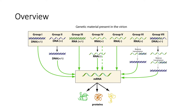Before we get into all the details, the purpose of the virus is to make copies of its genome and package these genomes into virions so they can infect new hosts. This means all viruses have to express their genes as functional mRNA so the host's translational machinery can synthesize viral proteins. The two objectives are: get to mRNA to make viral proteins, and duplicate the genome so it can be packaged and sent off to infect new hosts.